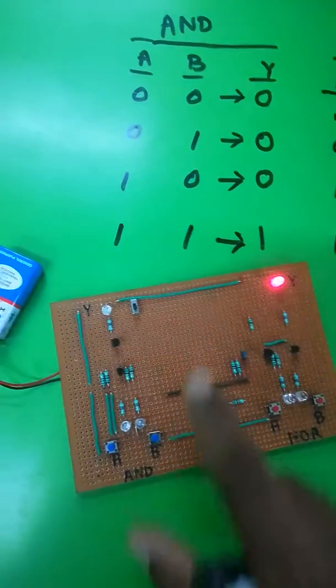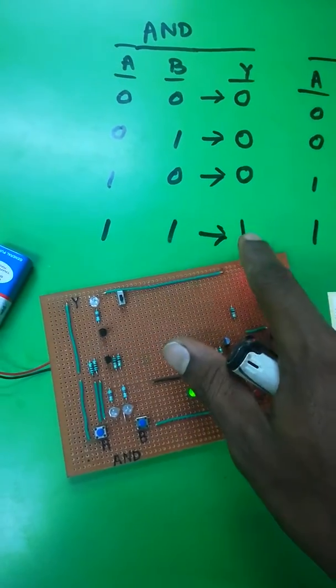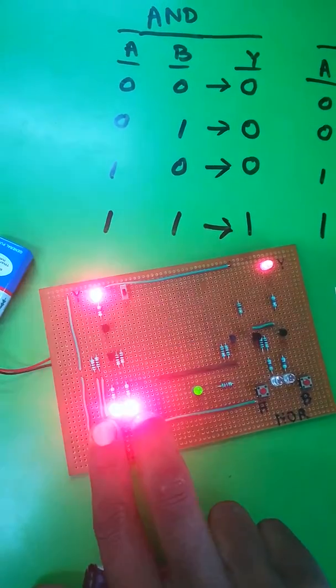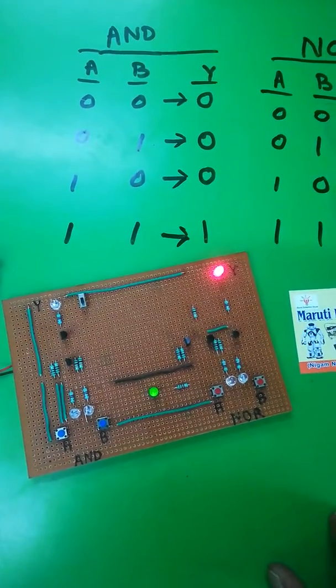If A is equal to 1, then output is 0. If B is equal to 1, then output is 0. Thank you for watching. Have a nice day.